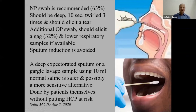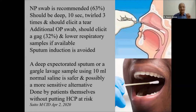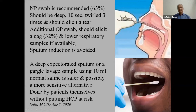The nasopharyngeal swab is the recommended specimen collection method, with a sensitivity of about 63%. It must be a deep swab, placed for 10 seconds to absorb nasopharyngeal secretions, and gently twirled three times. The patient often flinches — ideally, it should elicit a tear. The next preferred is the oropharyngeal swab, which should elicit a gag, with a sensitivity of about 32% — roughly half of the nasopharyngeal swab. Lower respiratory tract samples, when available, yield very good results, but abundant sputum is not an early feature of this disease.